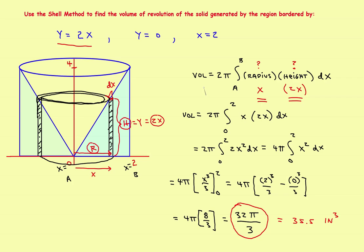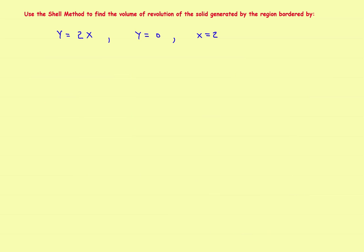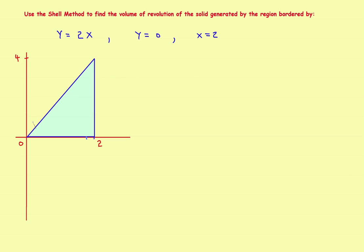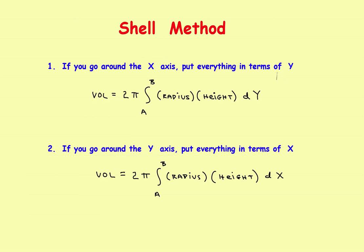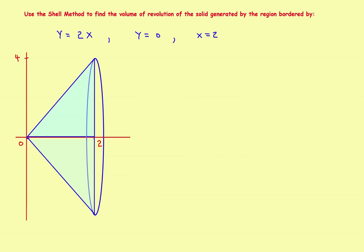Now let's look at exactly the same problem but going around the x-axis. The three lines are the same: y equals 2x, x equals 2, and y equals 0. This time, if we revolve it around the x-axis, it sweeps out a different solid. Since we're going around the x-axis, put everything in terms of y with a differential dy, using the top formula.